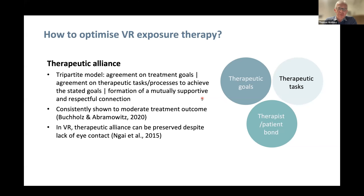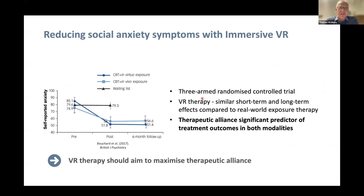There is work showing that even when people put on a VR headset and lose eye contact with the therapist, therapeutic alliance can be preserved. Indeed, one landmark study by Bouchard and colleagues — a three-armed randomized control trial on social anxiety disorder — showed that VR therapy has similar effects compared to in vivo exposure, lasting at least six months. Most importantly, they found therapeutic alliance to be a significant predictor of treatment effect strength: the stronger the therapeutic alliance, the larger the effects.